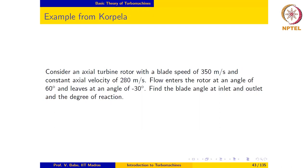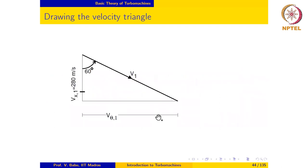The flow angle at the inlet is given to be plus 60 degrees, which means that the inlet absolute velocity vector is at an angle of 60 degrees in the counterclockwise direction from the reference direction. As you can see, the absolute velocity vector is at 60 degrees counterclockwise from the axial reference direction. The axial velocity is given to be 280 meters per second.